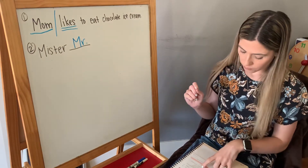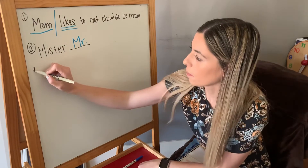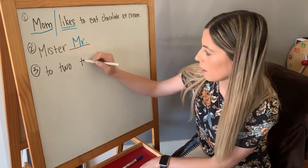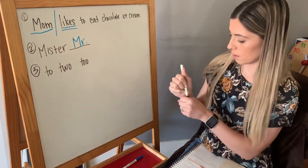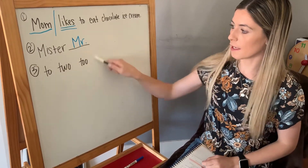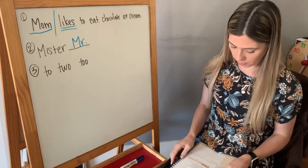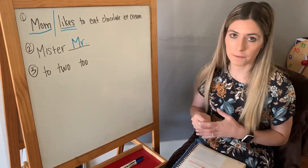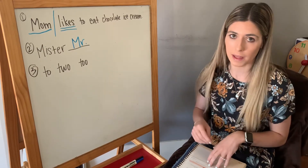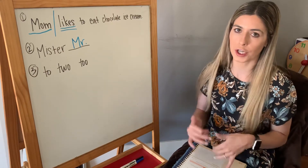A homonym that's not in this set but that we practice a lot are the words to, two, and too. This is a connecting word, this is the number two, and this means too much or also — it could mean either one of those things. So read the sentence, look carefully at the spelling because both words sound the same, and decide based on the words in the sentence which word you're going to circle in parentheses.